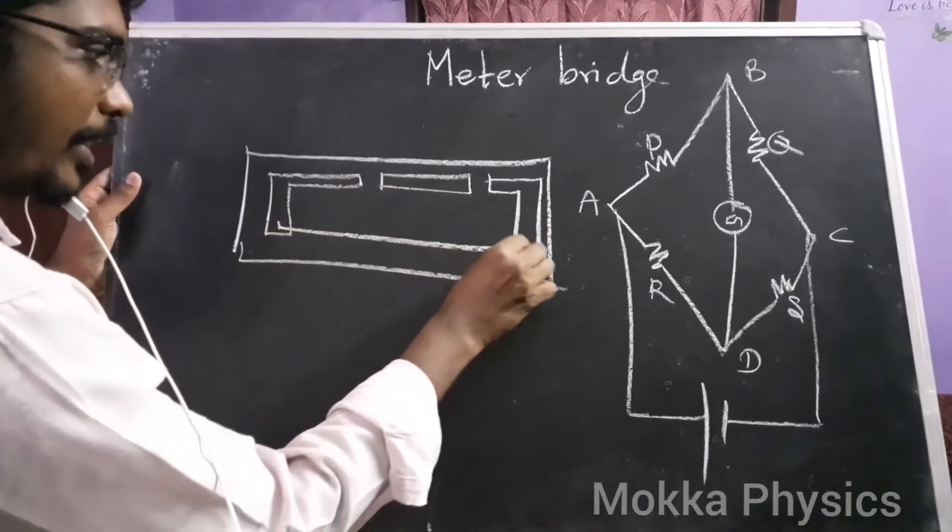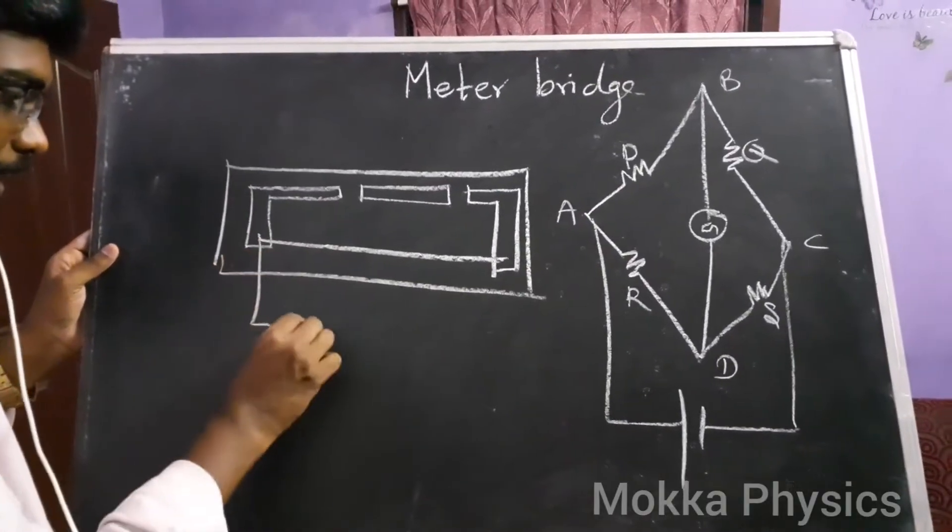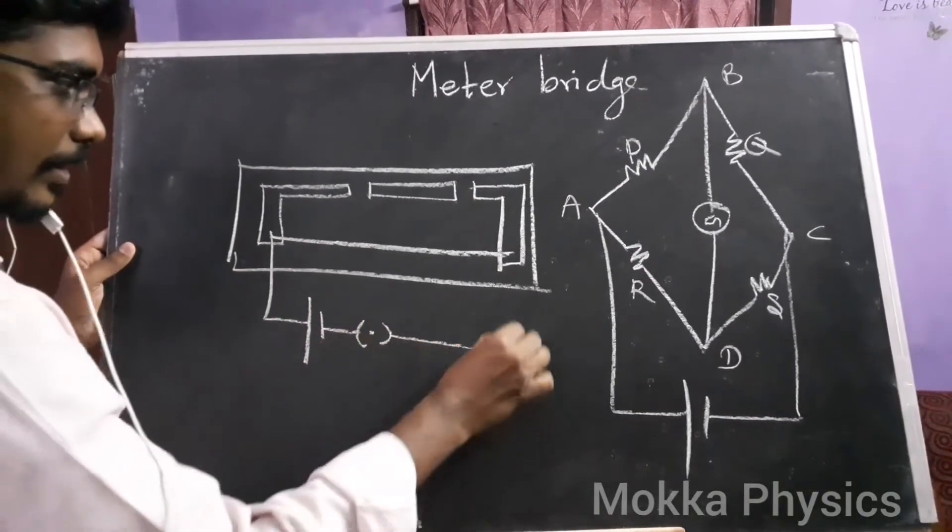We connect the strips with a 1-meter magnet wire. Now let's put it here. A battery, a key, and supply.